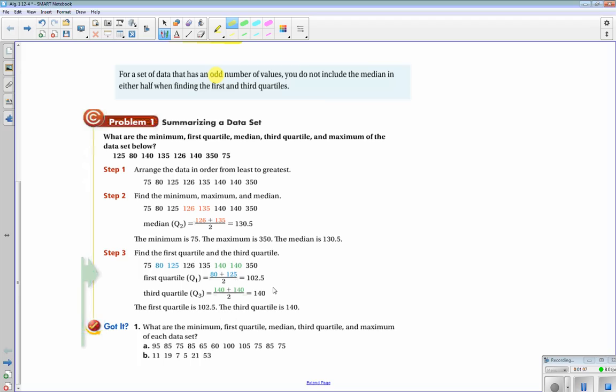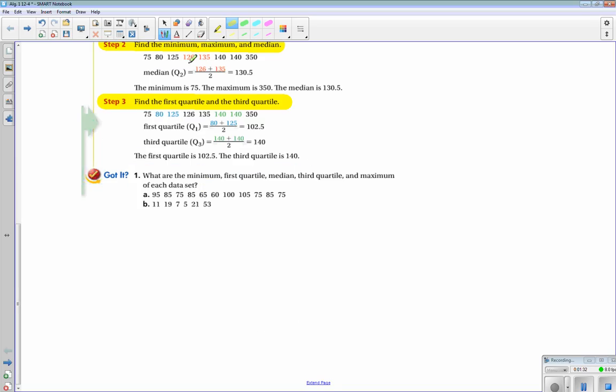Just note, for a set of data that has an odd number of values, don't include the median in either half when finding the first and third quartiles. What I want you guys to write down from problem one is: Step 1 is to arrange the data in order from least to greatest, Step 2 is to find the minimum, maximum, and median, Step 3 is to find the first quartile and third quartile. What are the minimum, first quartile, median, third quartile, and maximum of each set of data?